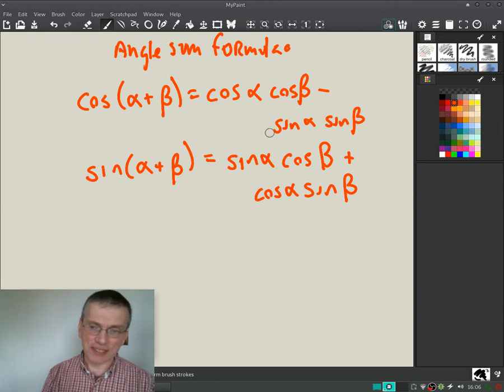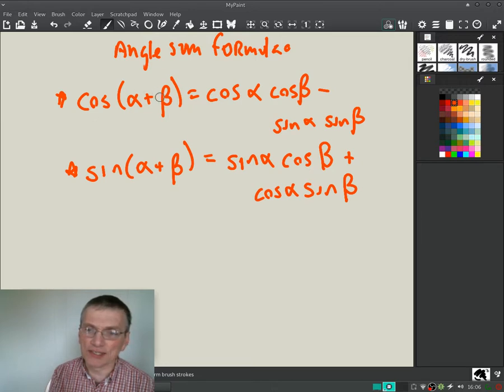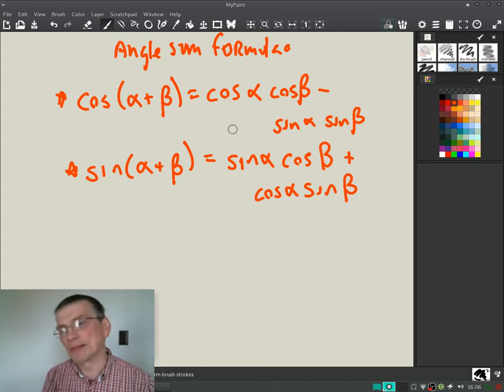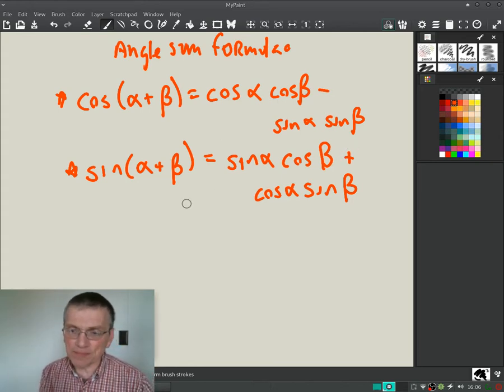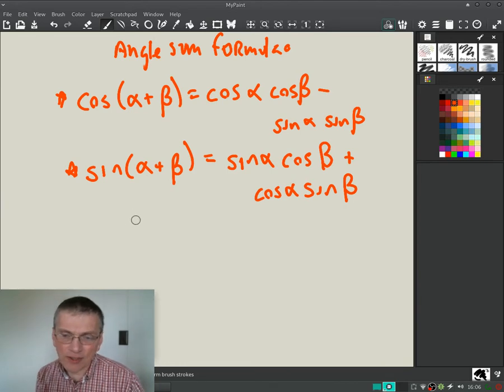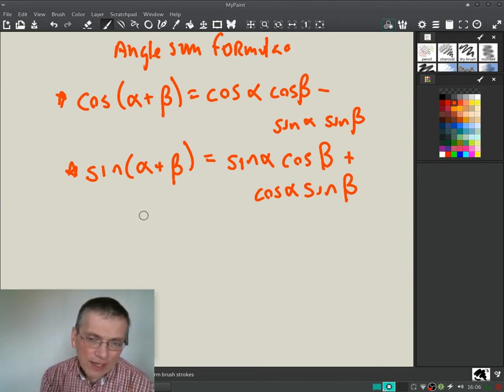So that's the two of them, and you can use the properties of sine and cosine to change these into the difference formula, alpha minus beta, which is very similar, just changes the signs here.